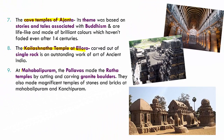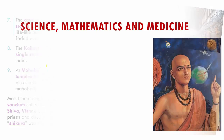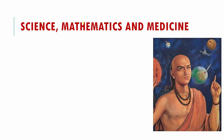We have the temples at Mahabalipuram — the Ratha temples — done by cutting and carving granite boulders. We also have magnificent temples at Kanchipuram built out of stone and brick. Most Hindu temples in ancient India have a central sanctum called the Garbhagriha, where deities of Shiva, Vishnu, or Durga are placed and worshiped. The Garbhagriha generally has a tower on top called the Shikhara. Most temple architecture even today features both a Garbhagriha and a Shikhara.